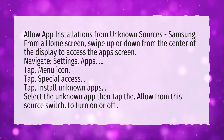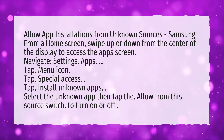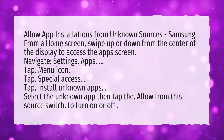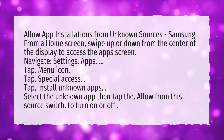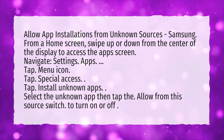Navigate to Settings, then Apps. Tap the Menu icon. Tap Special Access. Then tap Install unknown apps.